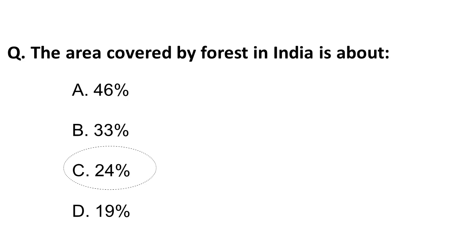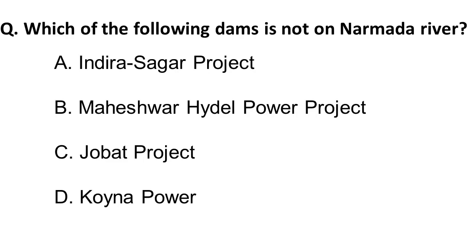Moving on to the next question: which of the following dams is NOT on the Narmada River? The four options include Indira Sagar Project, Maheshwar Hydro Power Project, Jobat Project — these three are on the Narmada River.